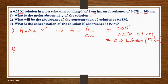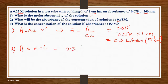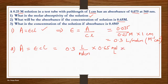Now coming to the second part of the question: they ask what will be the absorbance if the concentration of the solution is changed to 0.65 molar? You use the same equation A = ε·C·L. The value of ε you just calculated is 0.3 L mol⁻¹ cm⁻¹. Multiply by the new concentration of 0.65 molar and by the path length of 1 cm. When you solve this, you get a final answer of 0.195.